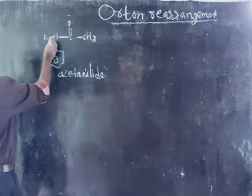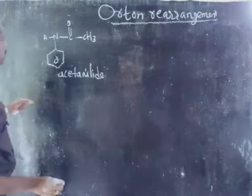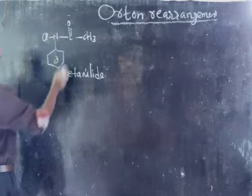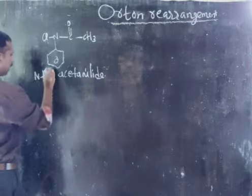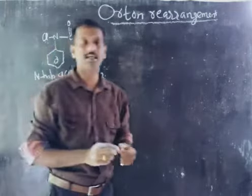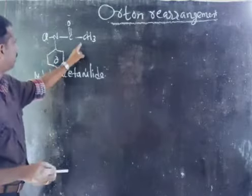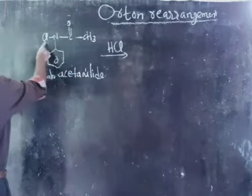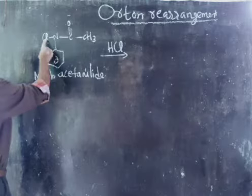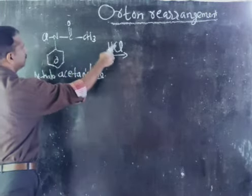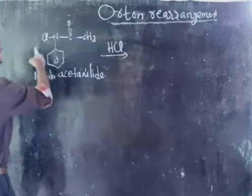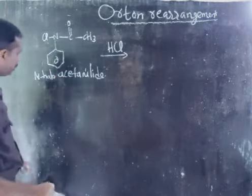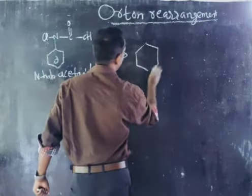Now we need N-haloacetamide. N-haloacetamide means one hydrogen atom present on the nitrogen is replaced by a halogen. So this is N-halo — specifically N-chloro — N-haloacetamide. When treated with a haloacid, meaning the corresponding haloacid: if it is Cl, then HCl.